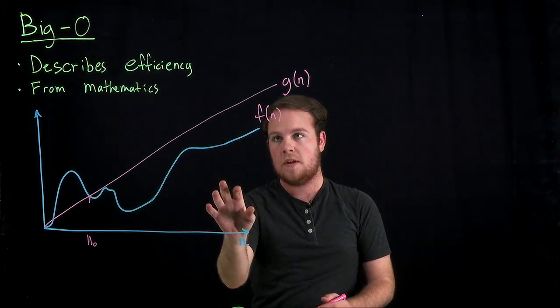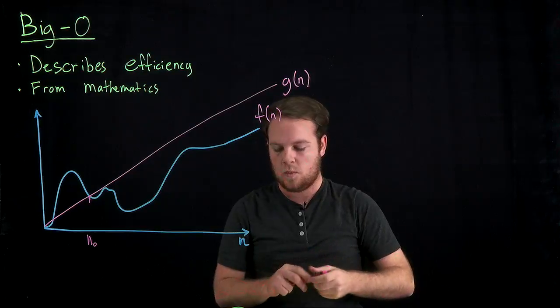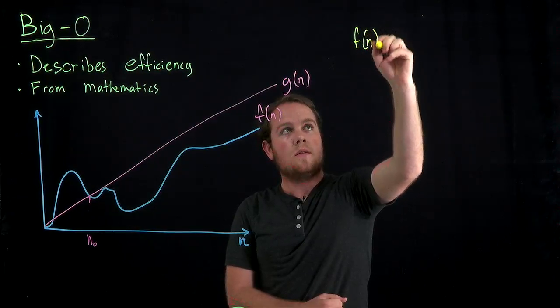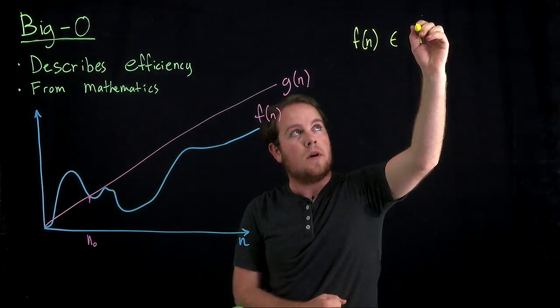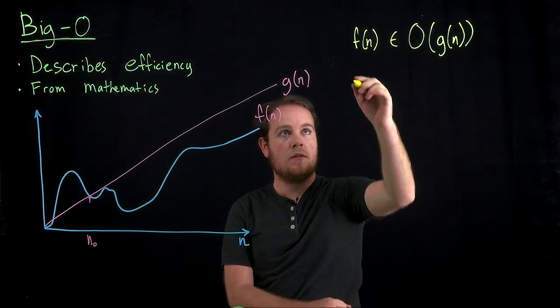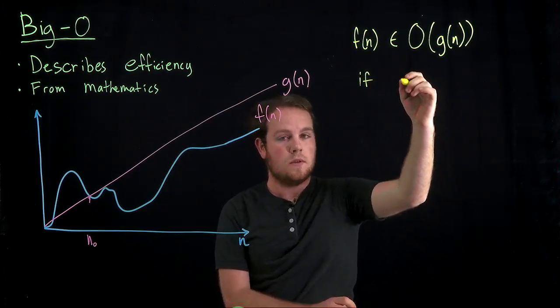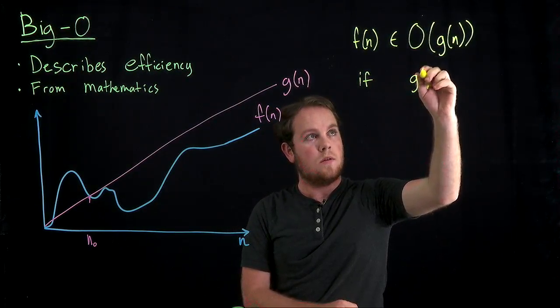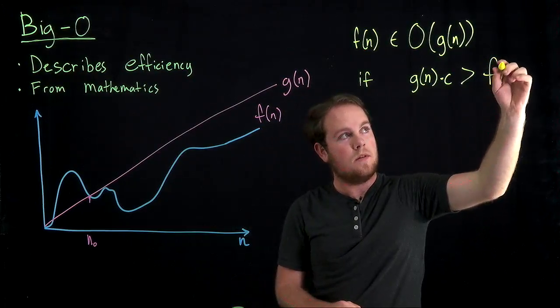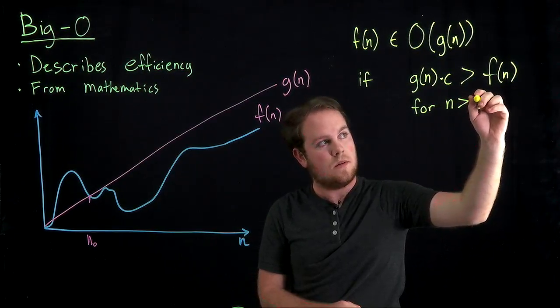f of n is always going to be lower than g of n times some constant. So more formally, we have f of n is upper bounded by g of n if for some point, n sub naught times some constant is larger than f of n for n larger than n sub naught.